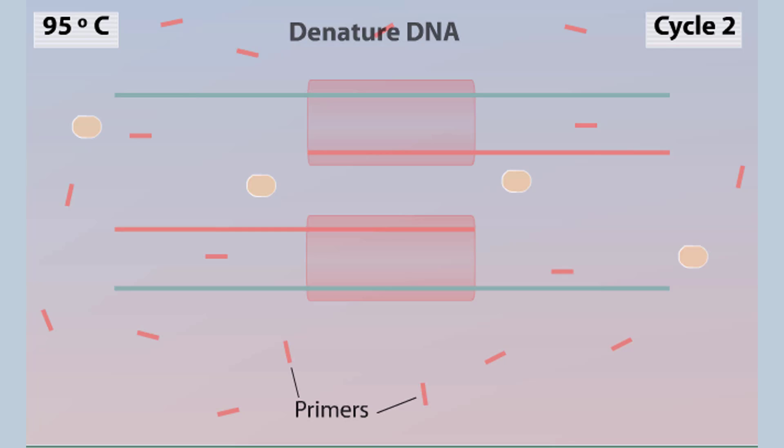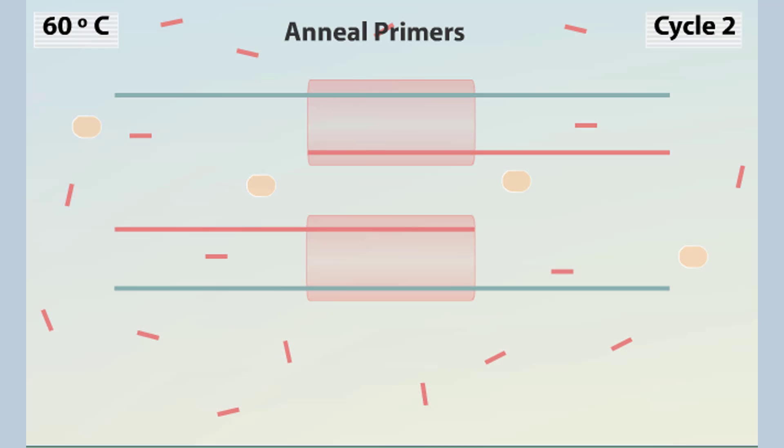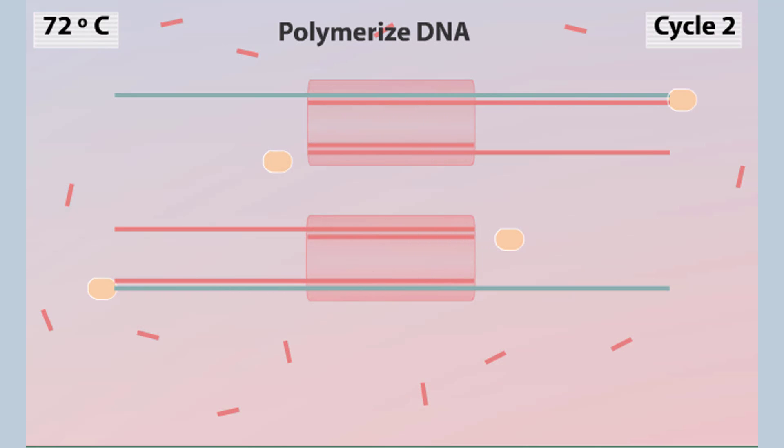The PCR reaction mixture contains many copies of the primers and an abundant supply of nucleotides to perform many additional cycles. After a second cycle, there are four copies of the target DNA.